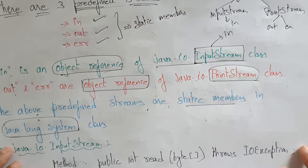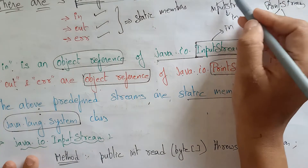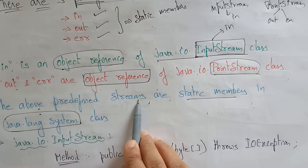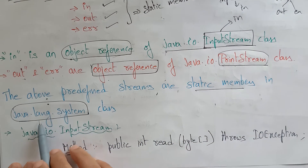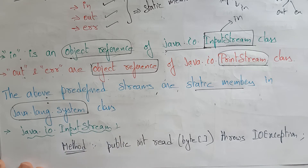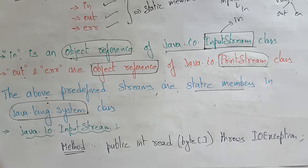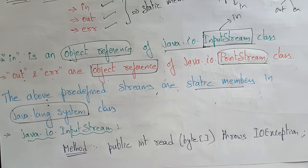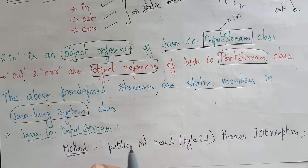I am just talking about in, out, and error — all are present in System class. Now let's discuss about InputStream and PrintStream. In the InputStream class, there are so many methods. But we will just take some methods and try to work out on examples. We can't learn all the methods present in Java — you can't remember all the things. So based on your requirement, you can use the javap tool.